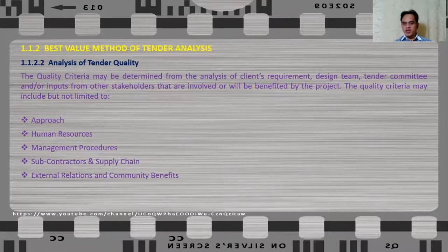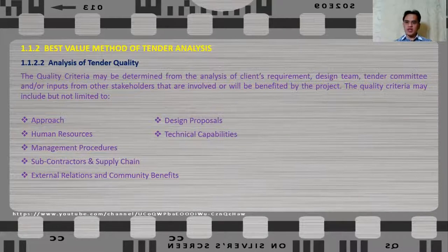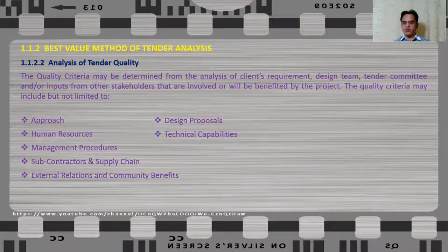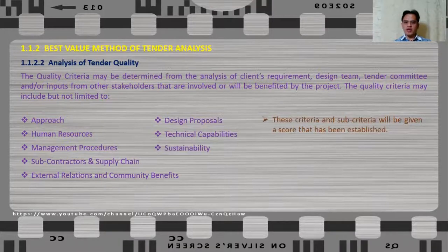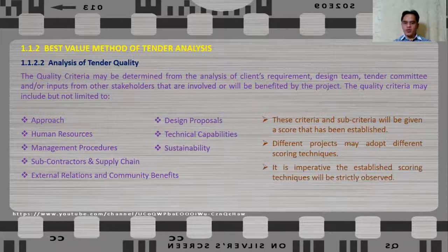Community benefits are particularly important for government projects. Other quality criteria include design proposals in the case of a design and build procurement route, technical capabilities — whether the company has enough equipment or has carried out projects of similar magnitude before — and sustainability. These criteria and sub-criteria will be given a score, and different projects may adopt different scoring techniques. It is imperative that the established scoring technique is observed strictly.